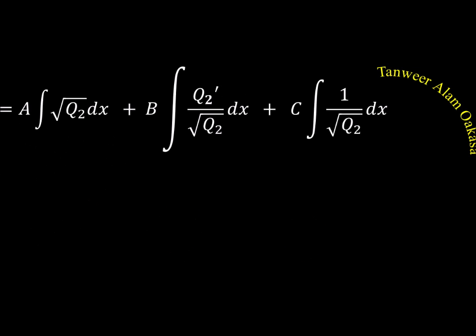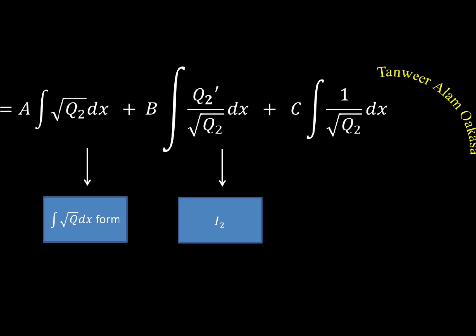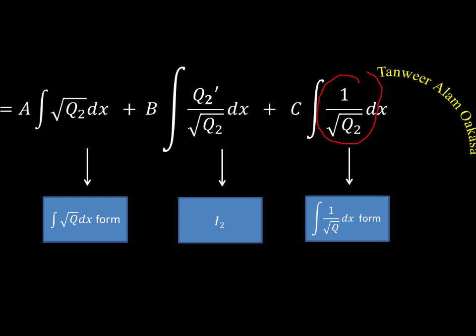The first part, A·Q2/√Q2, simplifies to A·√Q2 — the square root of quadratic form, whose answer we know: x/2·√Q ± (a/2)·log or similar standard form. The third part, C/√Q2, is the standard 1/√Q form giving either sine inverse or log. We only need to worry about the middle term I2.